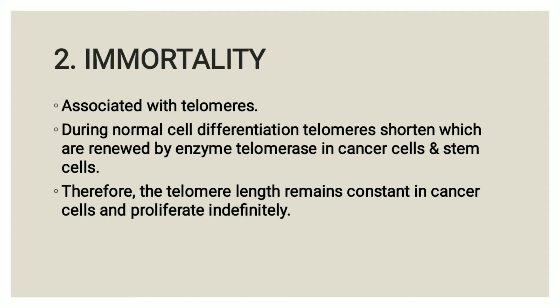One of the mechanisms for immortality is associated with telomeres, which are the tips of chromosomes. During normal cell differentiation, these telomeres shorten. However, telomeres are renewed by the effect of the enzyme telomerase in cancer cells and stem cells. Telomerase activity normally decreases during cell differentiation since the cell loses its capacity for proliferation. Fully differentiated cells enter a resting state and consequently die.